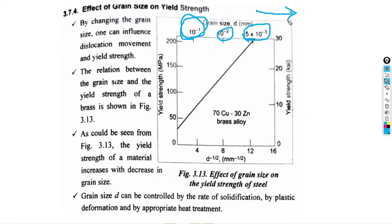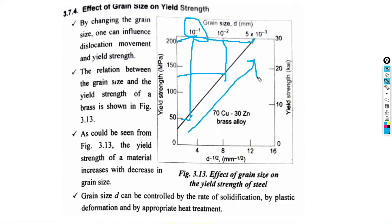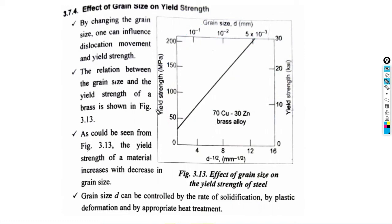Along the y-axis, we plot yield strength in MPa. At a grain size of 10 to the power of minus 1, the yield strength is 50 MPa. At 10 to the power of minus 2, it is 125 MPa. At 5 times 10 to the power of minus 3 (the smallest grain structure), the yield strength is 200 MPa. As the grain size decreases, yield strength increases — this is the grain size effect on yield strength.